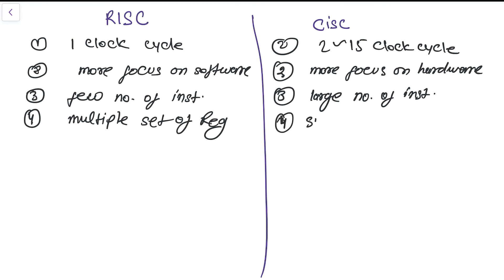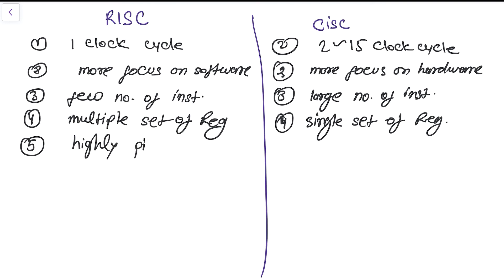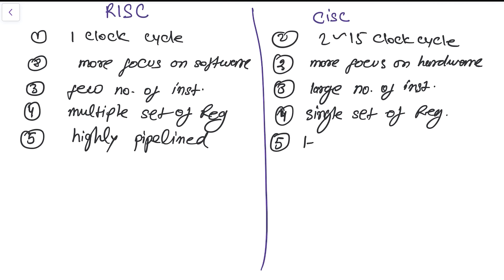In the CISC architecture it has a single set of registers. As you might have noticed in previous tutorials, an ARM microcontroller has a different set of registers for all 7 modes of operation, but in the CISC architecture it does not have a different set of registers. RISC type of architectures and processors are highly pipelined, while CISC type of instructions are less pipelined or not pipelined at all.